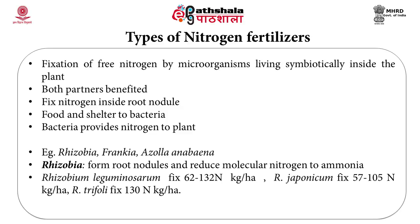The bacteria get food and shelter by living inside the root nodules, and in turn convert atmospheric nitrogen into a form available to the plant. Examples of symbiotic nitrogen-fixing bacteria are Rhizobia, Frankia, Azolla, and Anabaena. Rhizobia are root-nodule-forming bacteria that reduce molecular nitrogen to ammonia, then make it available for plant growth.